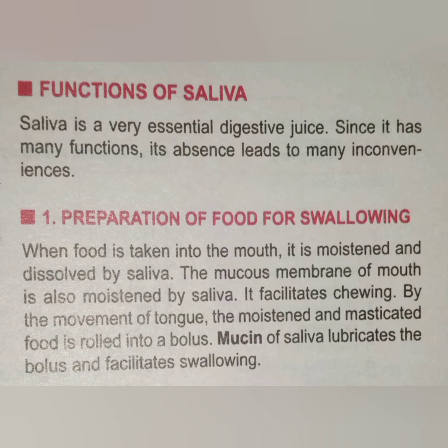Number one function is the preparation of food for swallowing. When food is taken into the mouth, it is moistened and dissolved by saliva. The mucus membrane of the mouth is also moistened by saliva. It facilitates chewing by movement of the tongue, which mixes food material with saliva. The moistened and masticated food is rolled into a bolus — mechanical digestion occurs by the help of teeth, and the bolus forms a ball-like structure for digestion.